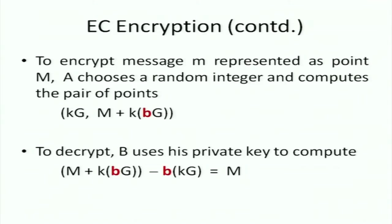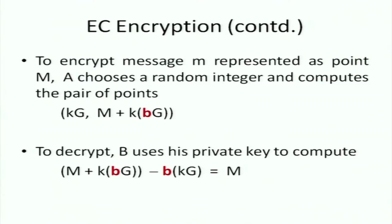For decryption, B uses his private key b. He takes the second part M + k·B·G and subtracts b times the first component k·G — since b·(k·G) = k·(b·G), this recovers M. Regarding converting a message to a point: yes, it is a bit of a pain, but there are algorithms. There is also an extended version in the book that doesn't require this conversion and operates directly.